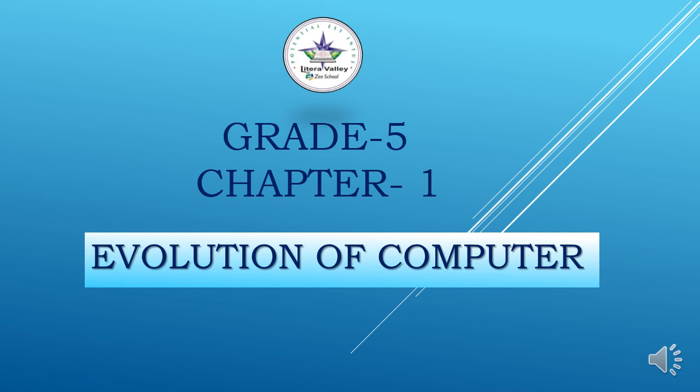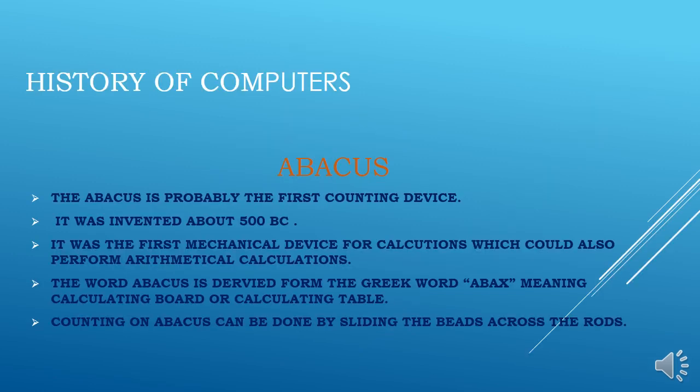Computers in the form of desktop computers, laptops and tablets have become such an important part of our life that it is difficult to remember a time when they did not exist. Man used his fingers and toes to count things. For quantities greater than 10, natural items like pebbles, seashells and twigs were used. The abacus is probably the first counting device.